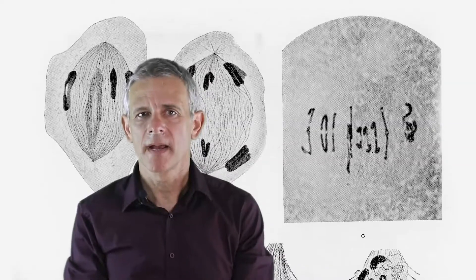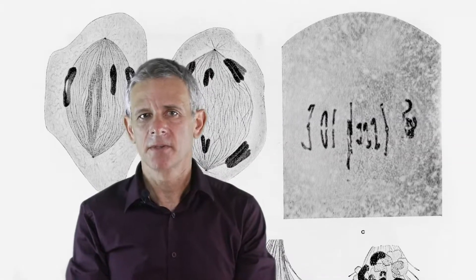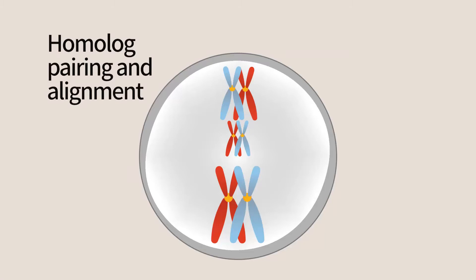In order to be sorted and separated in meiosis, the homologues of each pair must find and physically connect to each other. Homologues find each other and connect thanks to their very high, more than 99%, sequence similarity.